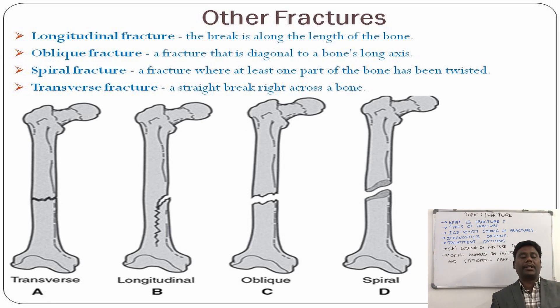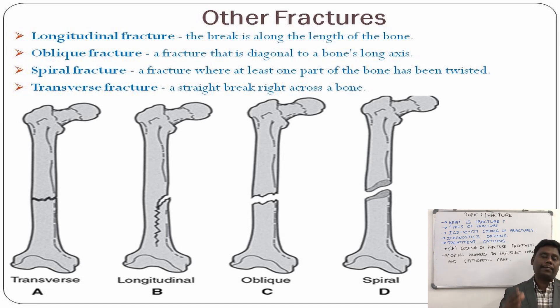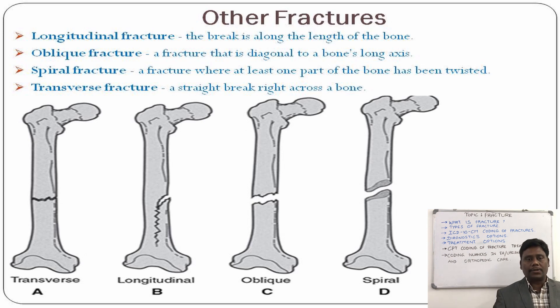In the case of a spiral fracture, one part of the bone may be twisted. In a transverse fracture, the fracture occurs right across the length of the bone.